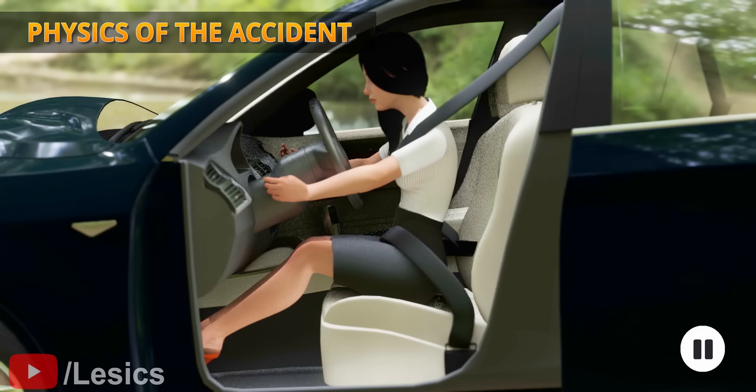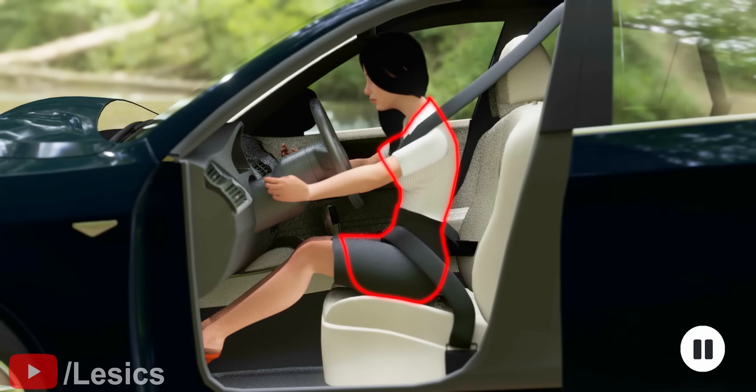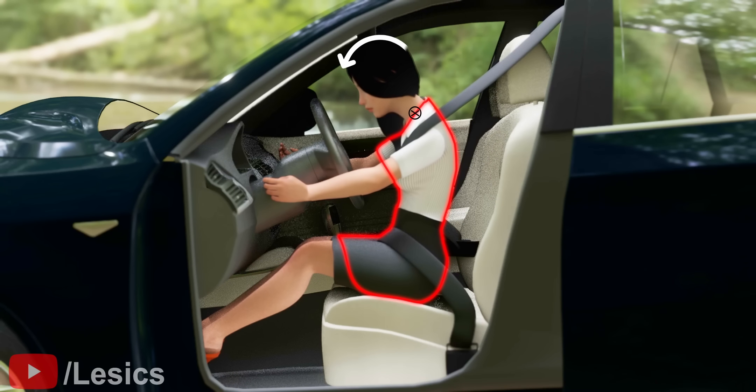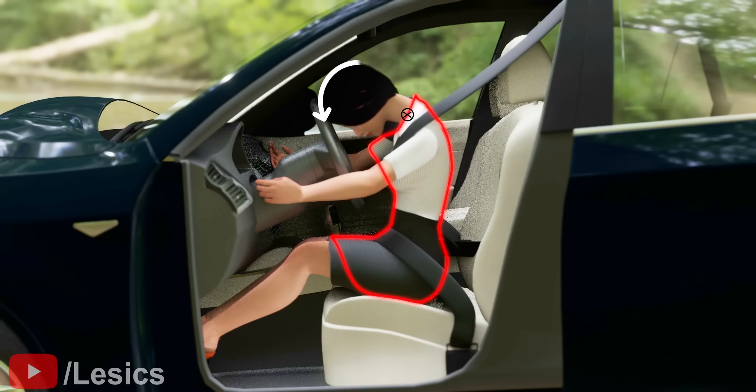Please note that the seatbelt arrests the motion of your upper body, excluding your neck and head. When only your upper body is arrested and the neck and head are not arrested, you can guess what will happen. The head goes in a perfect pendulum movement in a high-speed accident. The devastation can be horrific even with the seatbelt.